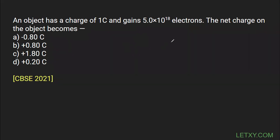Let us suppose that the total charge on the body is q. Q1 is basically the charge already on the body, which equals one coulomb. If it gains 5 into 10 to the power 18 electrons, then we need to find the new charge. Q2 will be the charge possessed by this amount of electrons. Q is the total charge, Q1 is one coulomb already given, and Q2 is what we have to find out.